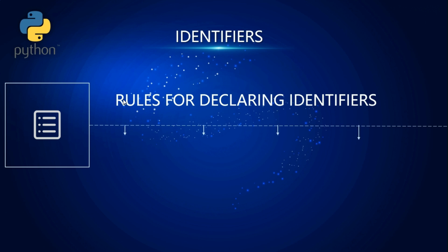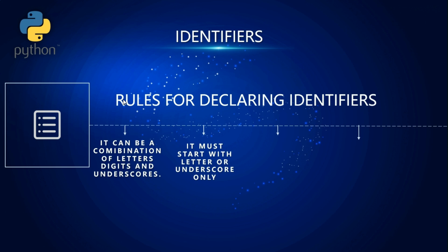The first building block is an identifier. An identifier is a name given to a function or a variable, and there are some rules you must follow. It can be a combination of letters, digits, and underscores — meaning it can be alphanumeric — and only underscores can be used as a symbol. It must start with a letter or underscore only; starting with a number will cause the interpreter to throw an error.